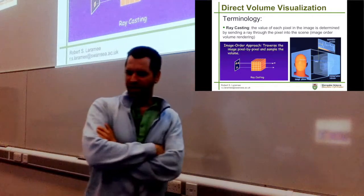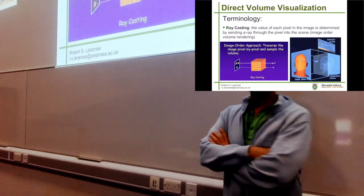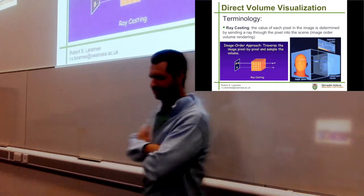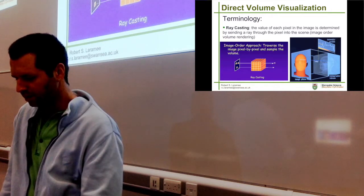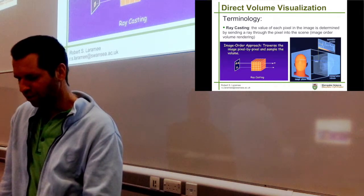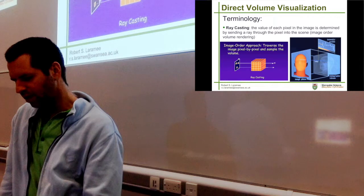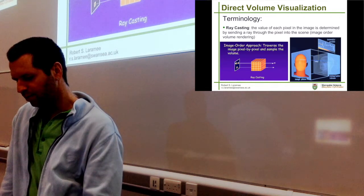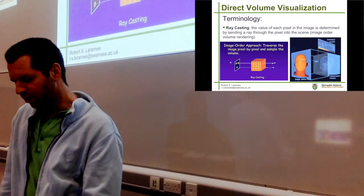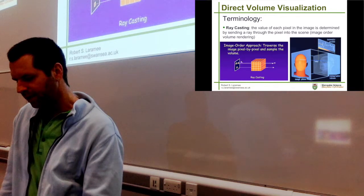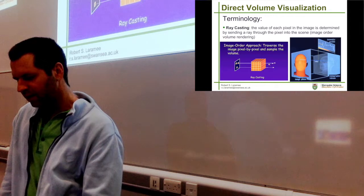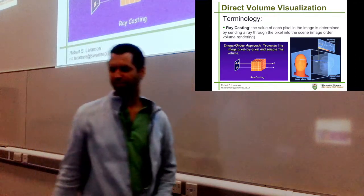Here's a new term: ray casting. Many of you have heard the term ray tracing - it's similar but not the same. In ray casting, the value of each pixel in the image is determined by sending a ray through the pixel into the scene. We saw this image already when we described image order volume visualization. This is the screen, the viewer is over here looking through the screen, and this is the volumetric data. You can imagine going from top left to right, then the next row in a rasterized fashion, pixel by pixel. For each pixel, casting a ray into the volume and sampling the data along the ray.